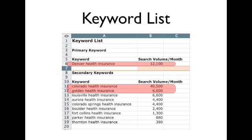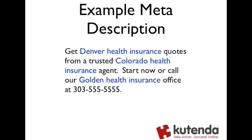To go through an example: your primary keyword is Denver Health Insurance. Under that, two secondary keywords — Colorado Health Insurance and Golden Health Insurance. You can take that and turn it into a meta description. For example: "Get Denver Health Insurance quotes from a trusted Colorado Health Insurance agent. Start now or call our Golden Health Insurance office at 303-555-5555." This is a good description because you're getting the phone number in there — so if somebody just wants to call instead of visiting your site, they can do that right from the search results. It also has a call to action: start now, call, get quotes — all things people are looking for when searching for insurance online.